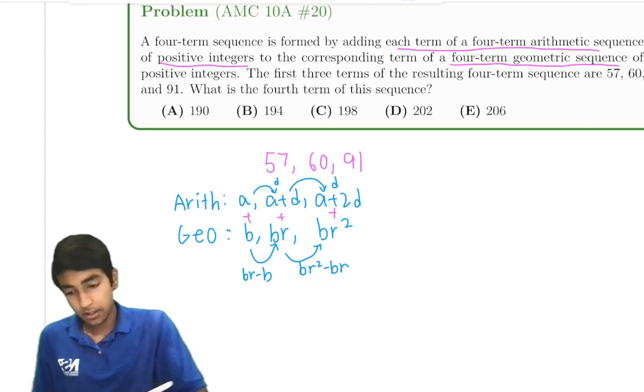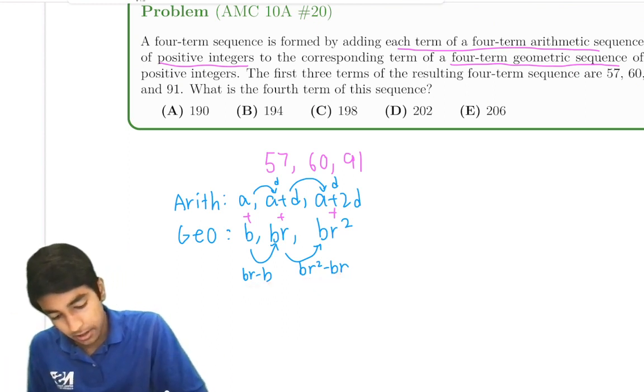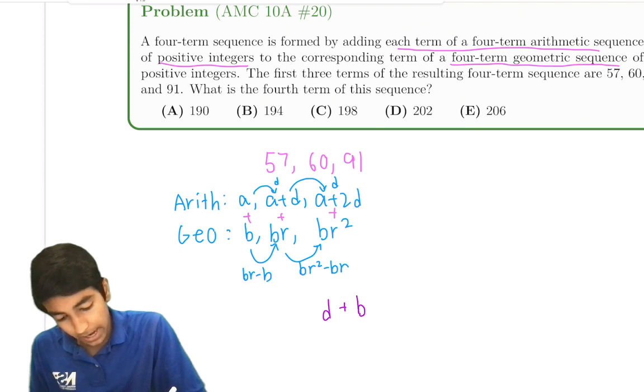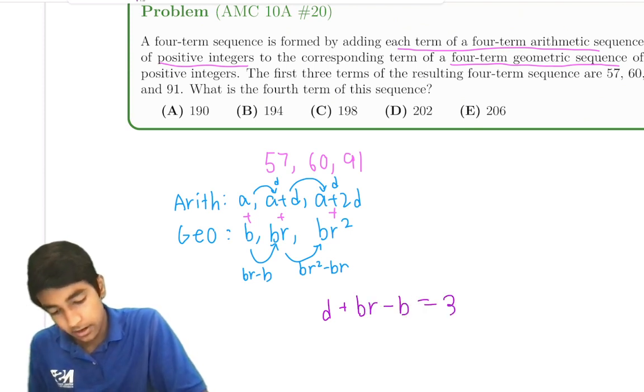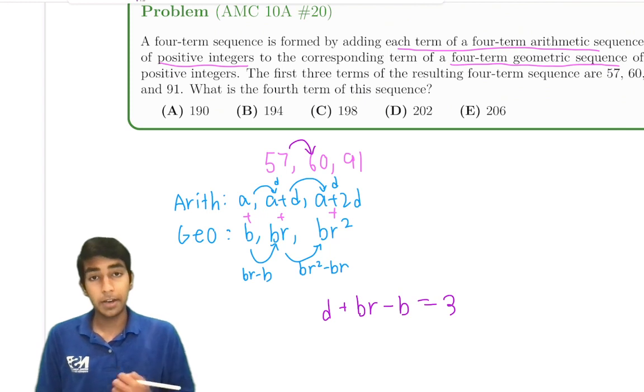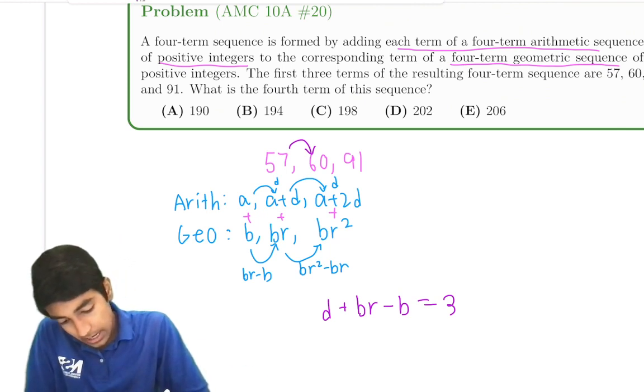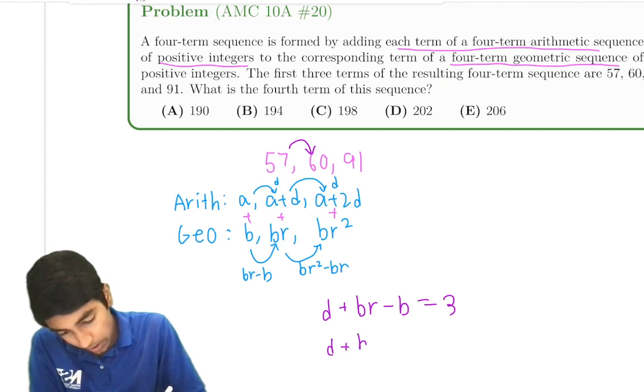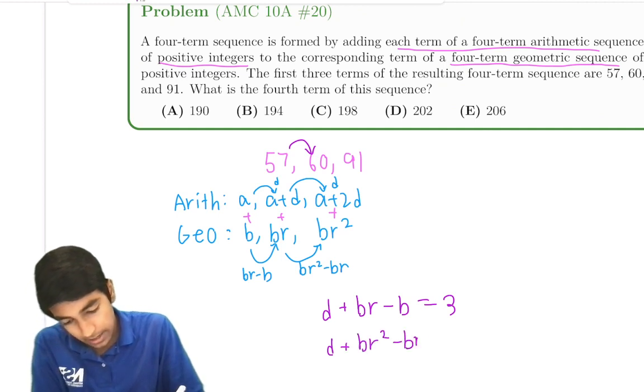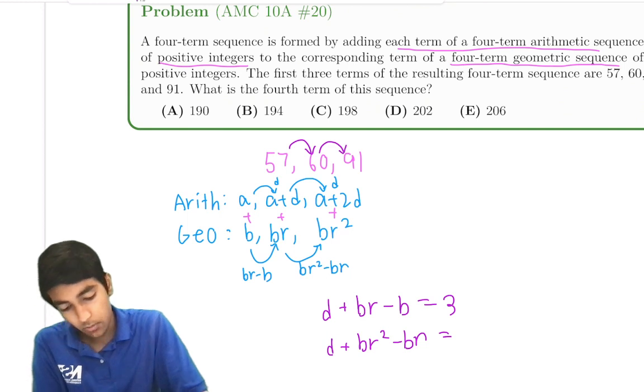Let's see what this means. So the first common difference, d plus br minus b is 3 (57 to 60). Then we have d plus br squared minus br is the common difference from here to here, 31.